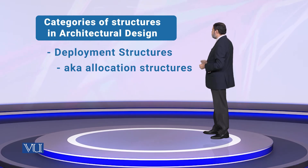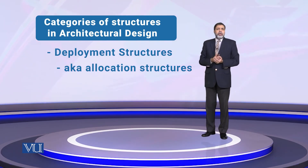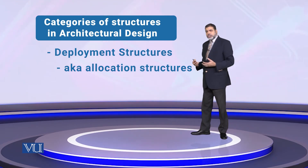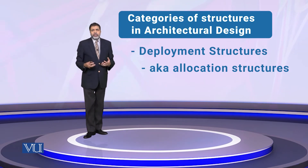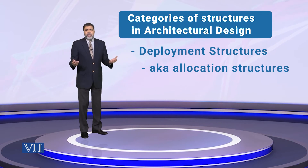The third category is called deployment structures, also known as allocation structures. Allocation structures describe how we deploy our modules or software. For example, we might say we have a web server, client machines, and a database server — where each is placed and how it is deployed: whether something is on the cloud, and what server each component is allocated to.